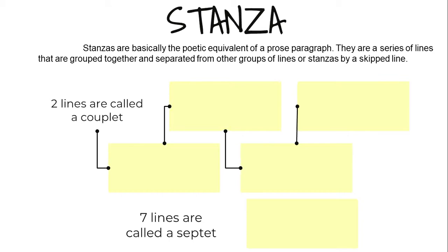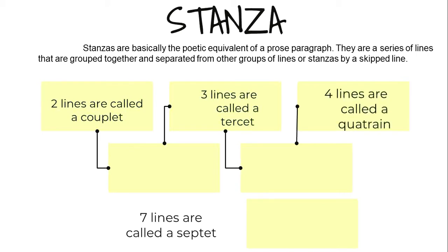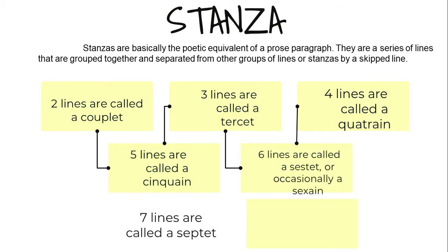There is a variety of technical vocabulary often used to refer to stanzas of specific lengths. Here are the most common: stanzas of two lines are called a couplet, three lines are called a tercet, four lines are called a quatrain, five lines are called a cinquain, six lines are called a sestet or occasionally a sexain, seven lines are called a septet, and eight lines are called an octave.